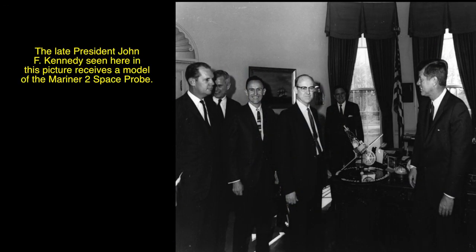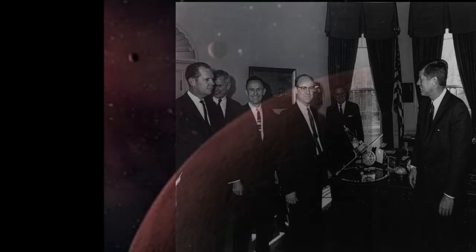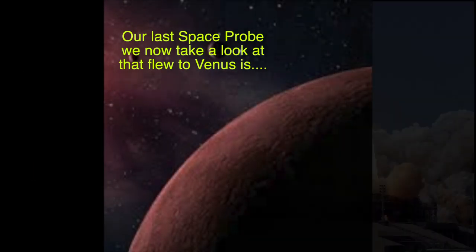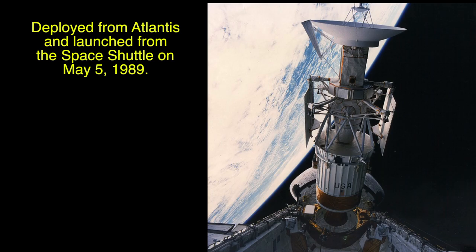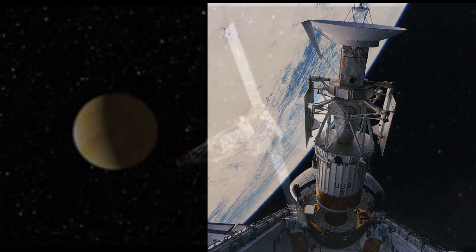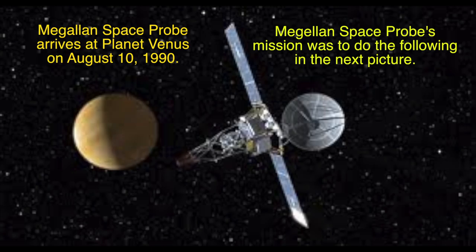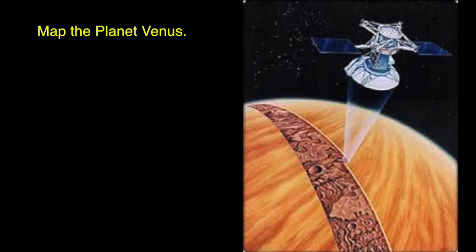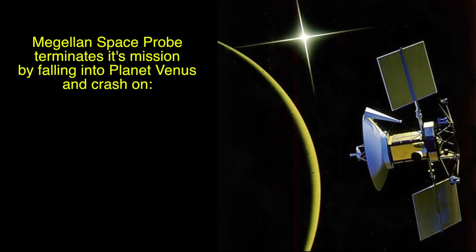The late president John F. Kennedy received a model of the Mariner 2 space probe, presented by the director of JPL, Dr. William H. Pickering. The Magellan space probe was launched on board the Atlantis space shuttle from Cape Canaveral, Florida, on May 4, 1989. Total cost of the space probe: $680 million. It takes Magellan about 15 months to arrive at planet Venus. Magellan arrived at Venus on August 10, 1990, and its mission was to map the planet Venus for four years from 1990 to 1994. Magellan terminated its mission by crashing into Venus on October 13, 1994.